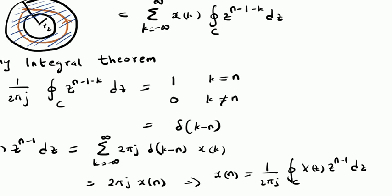The time domain sequence X of n is given by 1 over 2 pi j times the closed contour integral of X of Z multiplied by Z power n minus 1. This is the Cauchy Integral Theorem based inverse Z-transform.